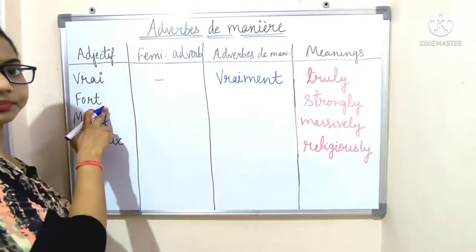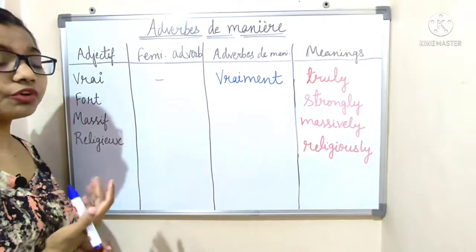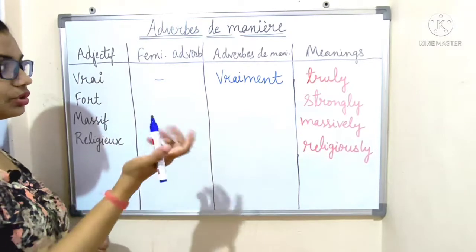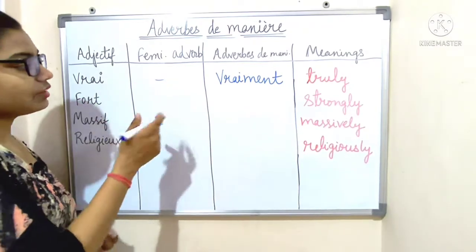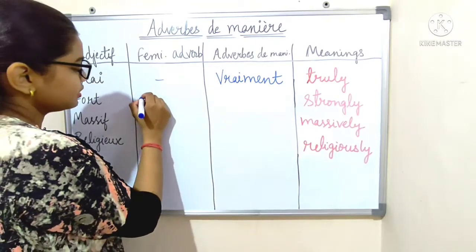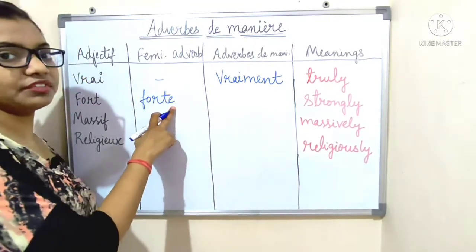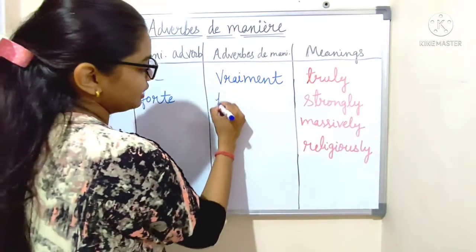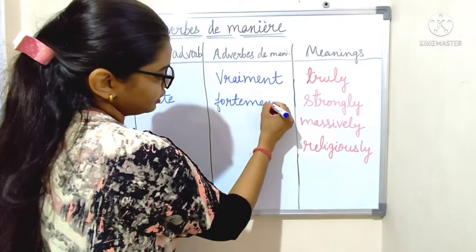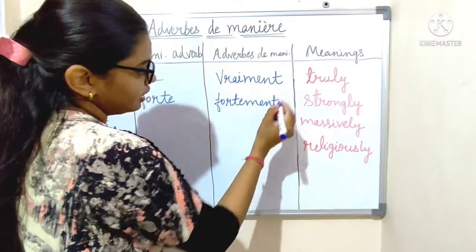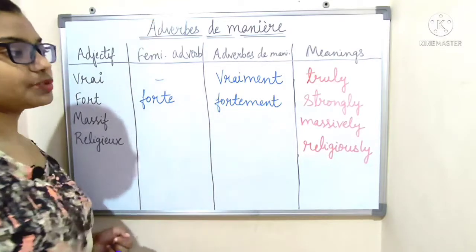Next: 'fort', which means 'strongly'. It ends with a consonant, so we make it feminine first: F-O-R-T-E. Then add '-ment': 'fortement', which means 'strongly'.